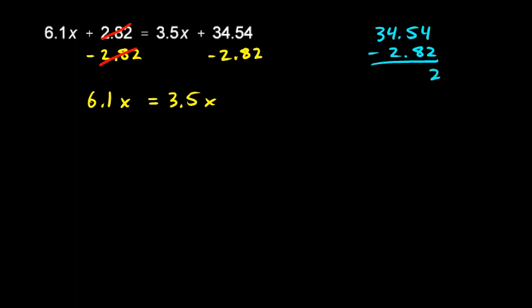4 minus 2 is 2, and then I'm going to borrow right here. That 5 is going to become a 15, and the 4 becomes a 3. So, 15 minus 8 is 7. 3 minus 2 is 1. I have 31.72.